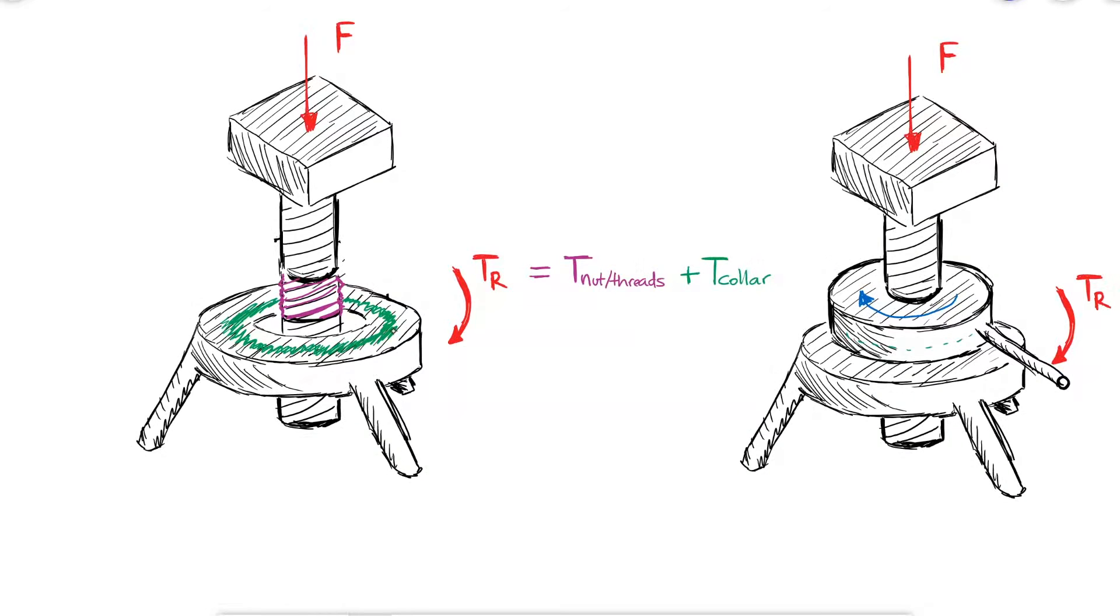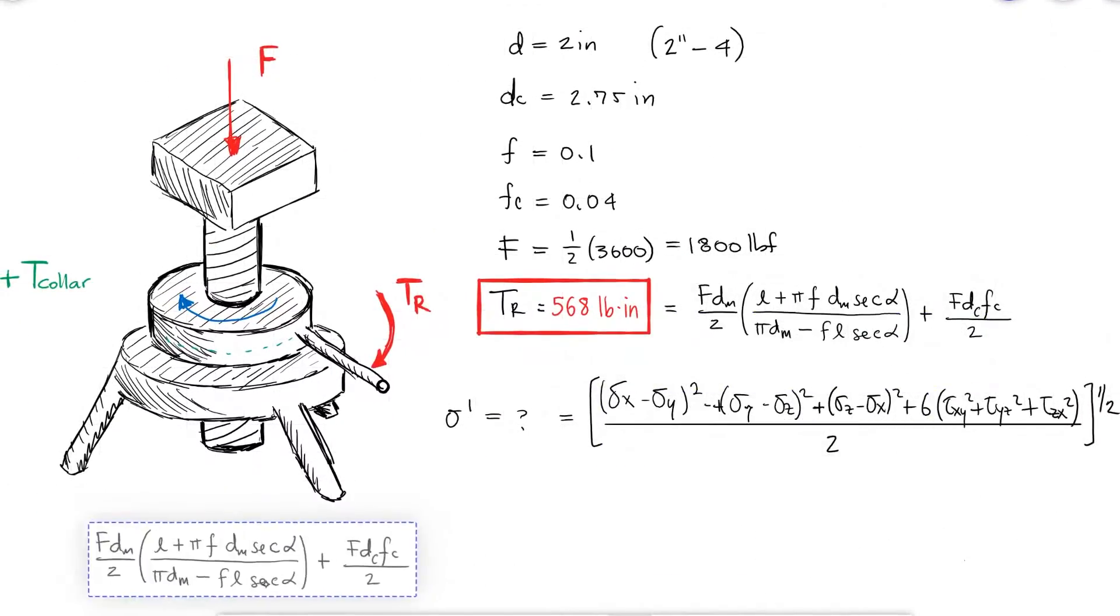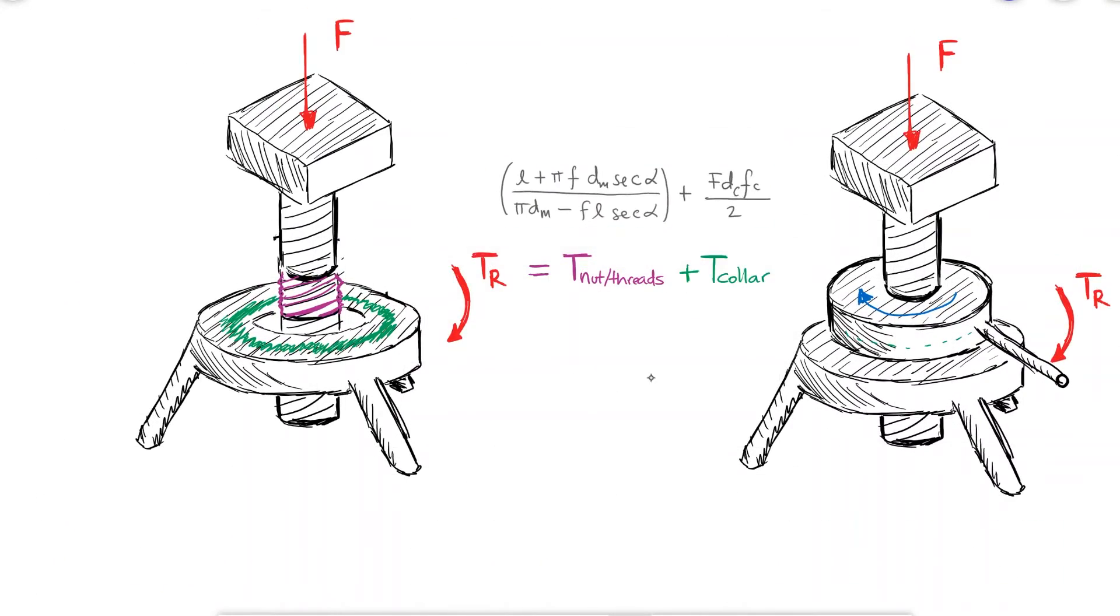For this reason, the torque that we would use to calculate the stresses at the threads is the torque that affects the threads. We wouldn't use the total torque of 568 pound inches to calculate those stresses.